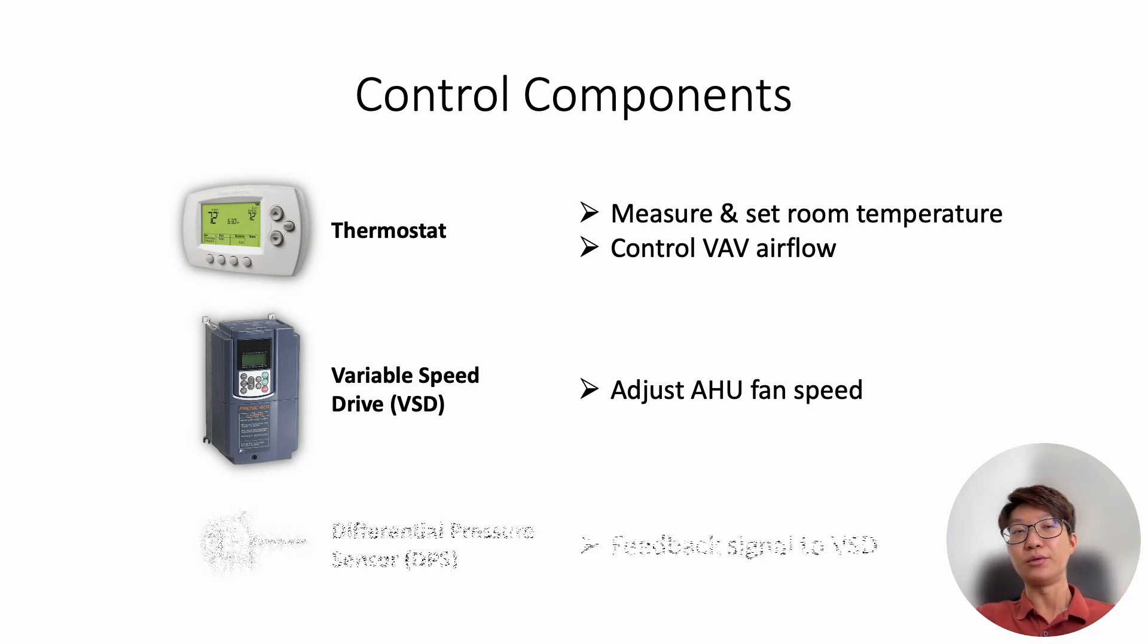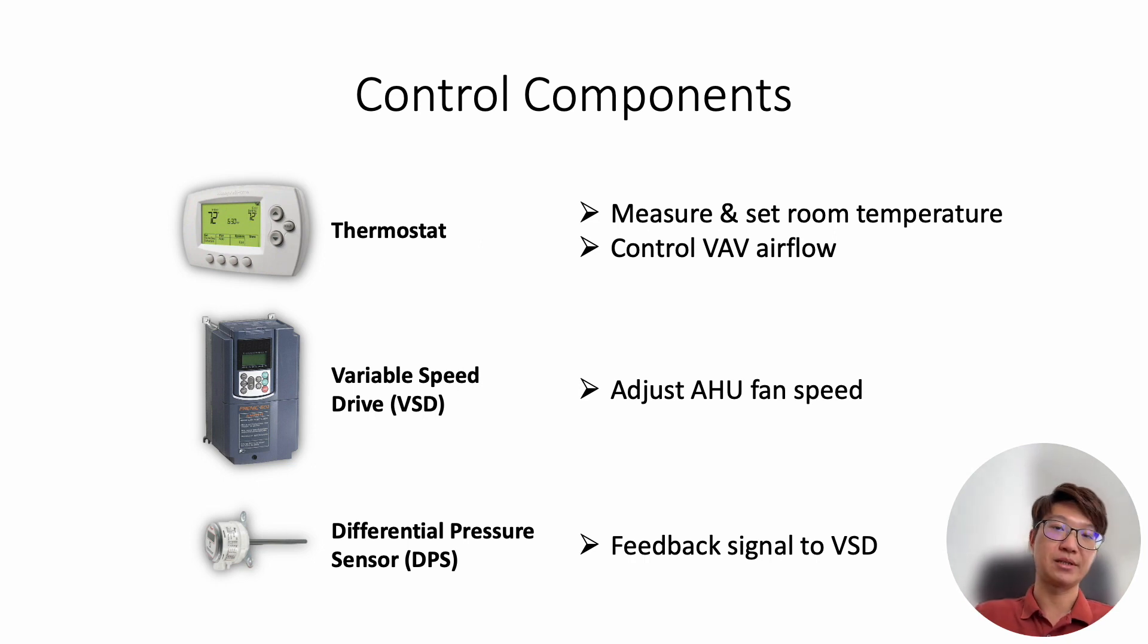Then the third component we need to control the VAV system is the differential pressure sensor, DPS. This is the duct type differential pressure sensor. It will be installed inside the duct. So because when the VAV starts to close, it will increase the air pressure inside the duct. So this sensor will pick up the signal and tell the VSD to reduce AHU fan speed.